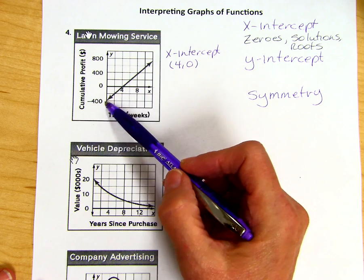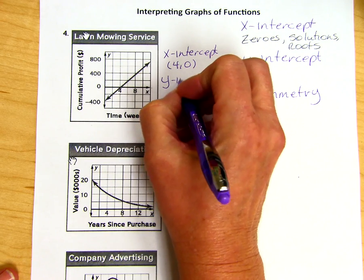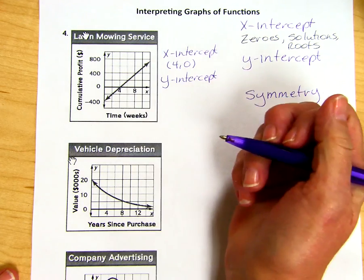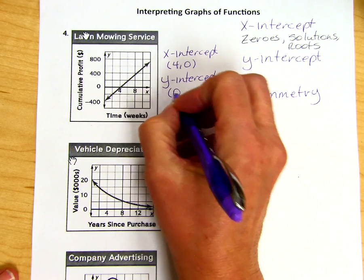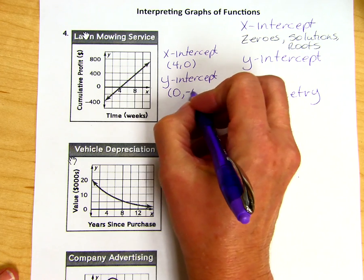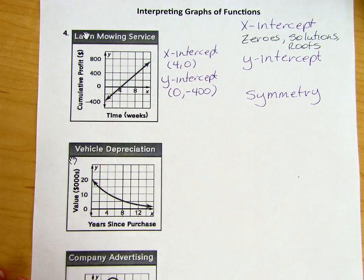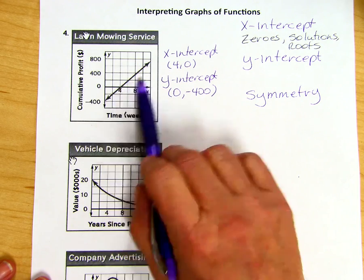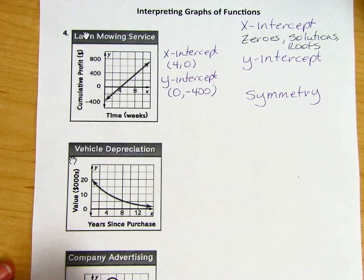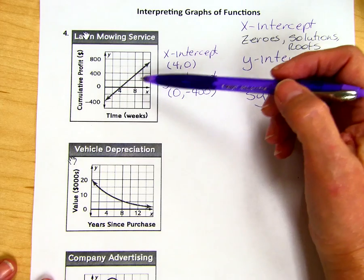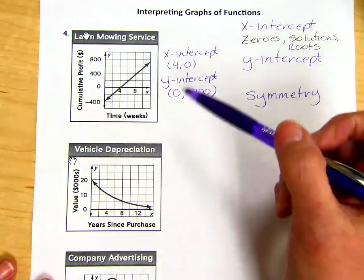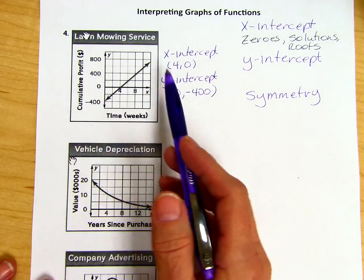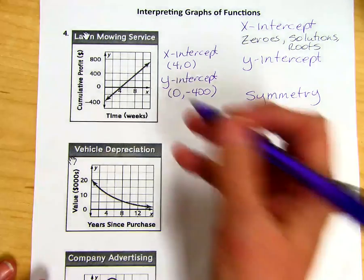Previous to that, between zero and four weeks, they were down here in the negatives. So their y-intercept was negative 400. Before they even started, they had spent $400 on their business. And after four weeks, they broke even and after that, they began to turn a profit. If I took and looked for a center point here and tried to fold this over, I'm not going to have the same thing on both sides. So this does not have symmetry.